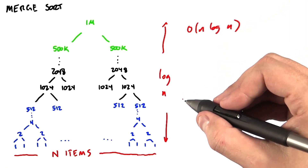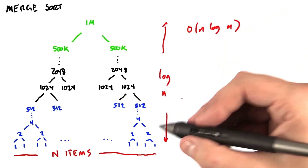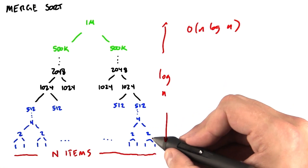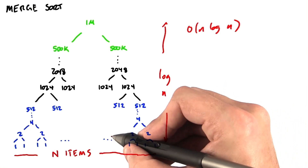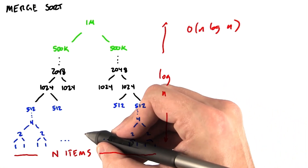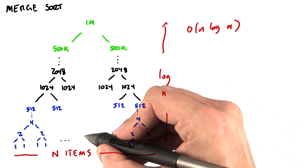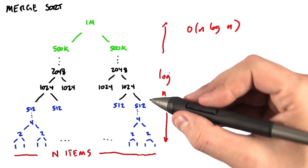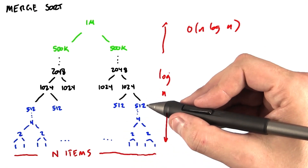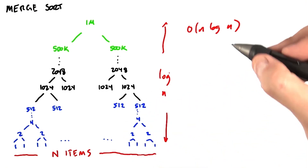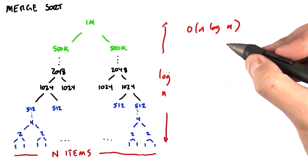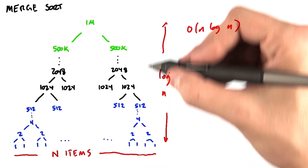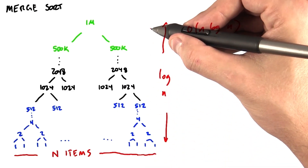This algorithm exposes a lot of parallelism. Within each step, each individual merge can proceed in parallel. Now the hard part about mapping this to the GPU is that the number and size of merges we perform on each step differs greatly between the first step and the last.